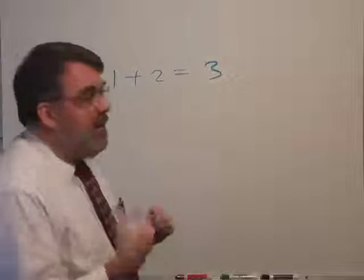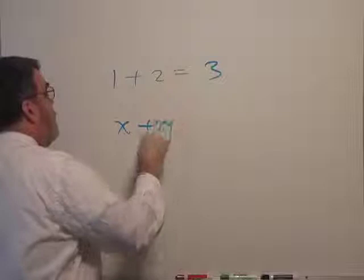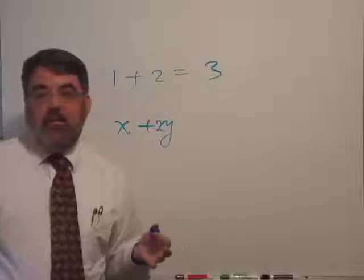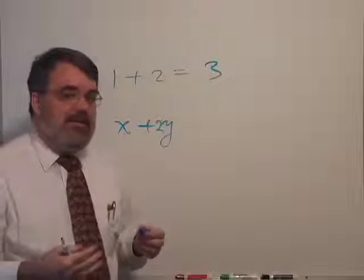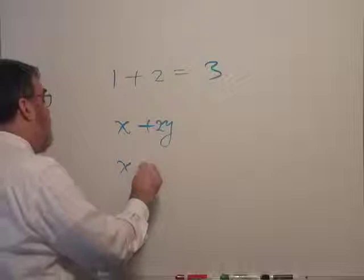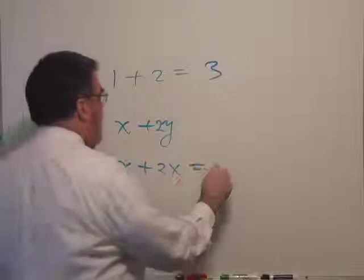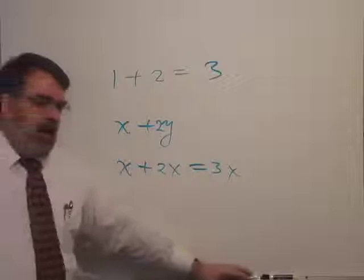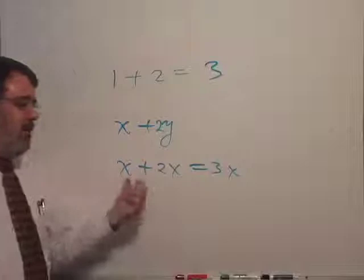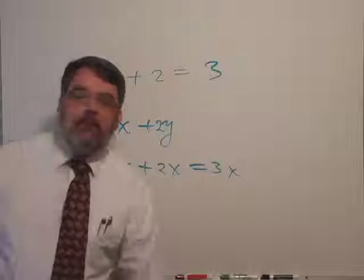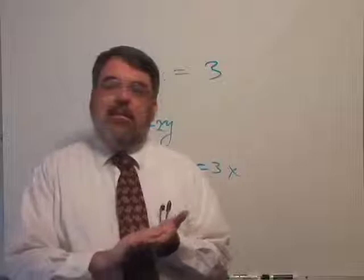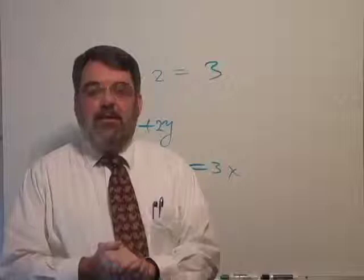How that turns into algebra: what is x plus 2y? x plus 2y is x plus 2y. We can't combine those terms because they're unlike terms with unlike units. However, what is x plus 2x? That is 3x. That can be combined because now we have the same units. I can add 1 foot plus 2 feet and get 3 feet, but I can't add 1 foot plus 2 hours and get 3 of something.